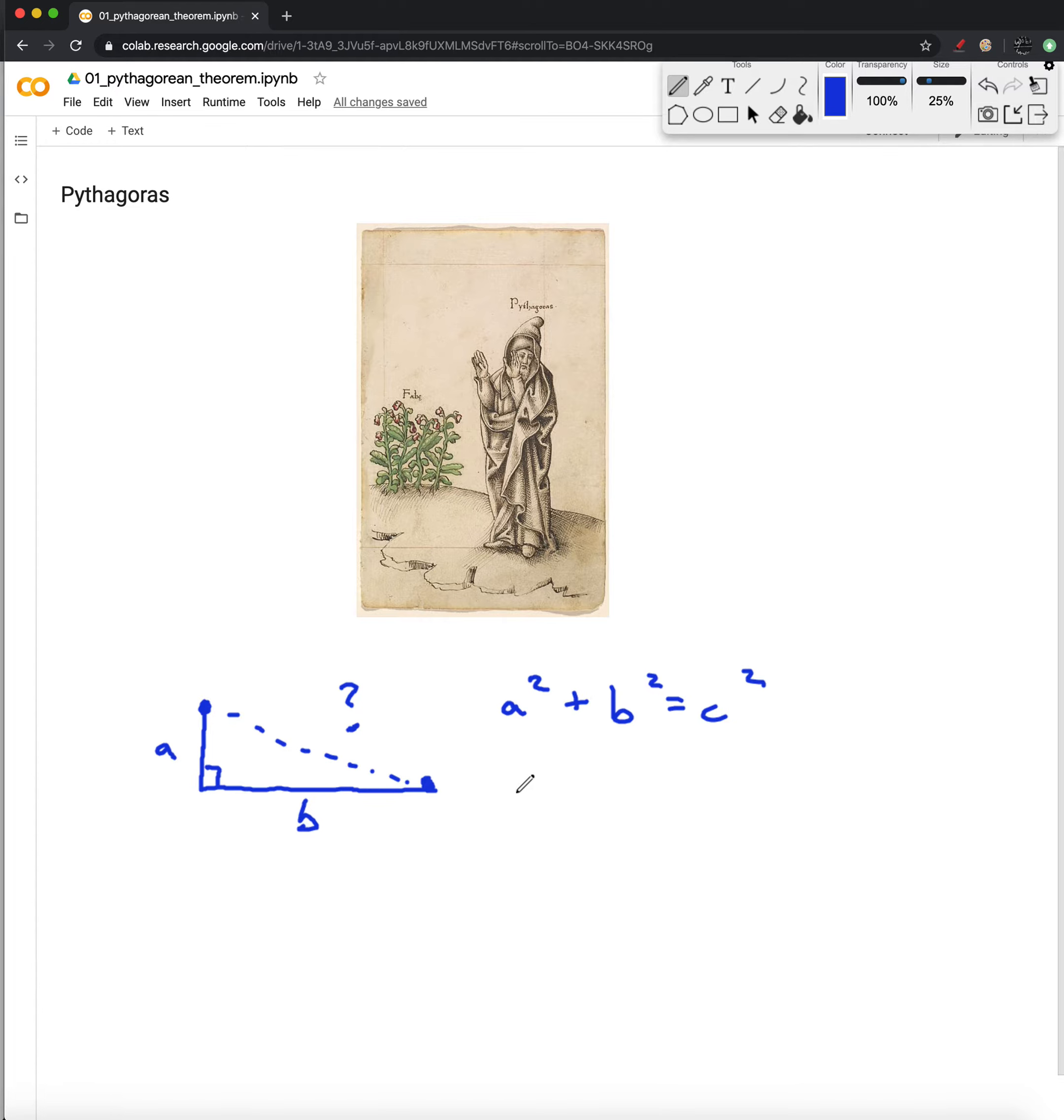Suppose for example we build a triangle between two points and we find that one side is 3 and the other side is 4. Then we can tell how far apart those two are because 3 squared plus 4 squared is 25.